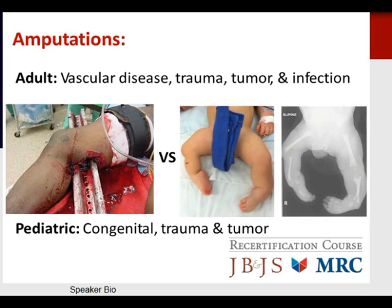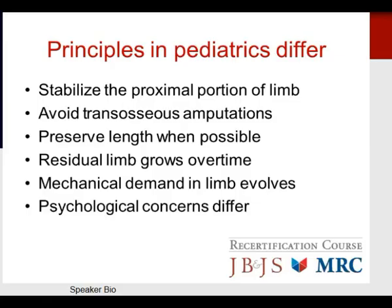Amputations are an important aspect of any orthopedic surgeon's care. Adult amputations are often needed secondary to vascular disease, trauma, tumors, or infection. Pediatric amputations are often necessary due to congenital deformities or anomalies, trauma, and tumors. In pediatrics, principles differ from adult management: it is important to stabilize the proximal portion of the limb, avoid transosseous amputations when possible, preserve length, and understand that the residual limb can grow over time as mechanical demand evolves.